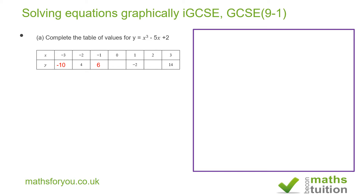When x = 0, obviously both x³ and -5x are 0, so we end up with 2. When x = 2: 2³ = 8 and -5 × 2 = -10, so 8 - 10 + 2 = 0. We expect 0 there. That's our answer. Moving on to part b.